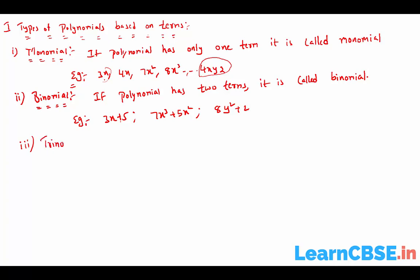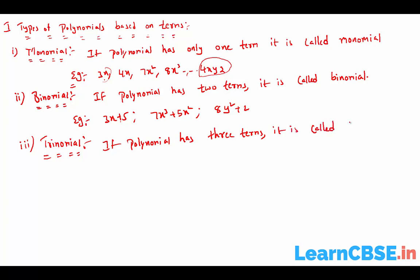Next is trinomial. If a polynomial has three terms, it is called a trinomial. For example: 3x² + 5x + 4, or 5x³ + 6x² + 7. When a polynomial has three terms, it is called a trinomial.